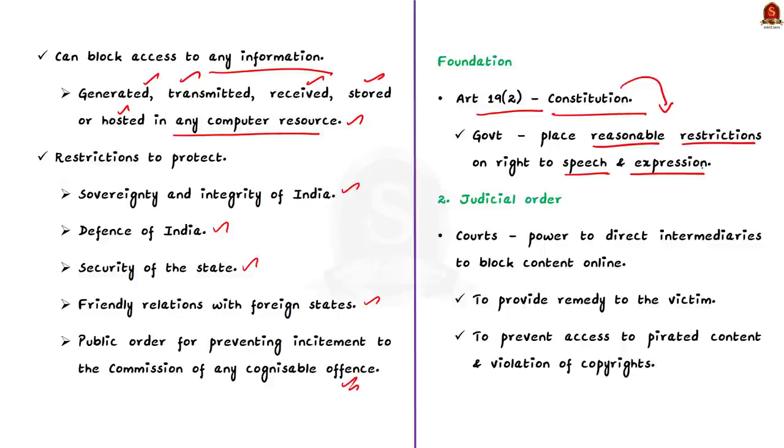Now let us see the second route which is the judicial order. Courts in India also have the power to direct intermediaries to make content unavailable. This is done to provide effective remedy to the victim. For example, courts may order internet service providers to block websites which provide access to pirated content which violate the copyrights of plaintiff.